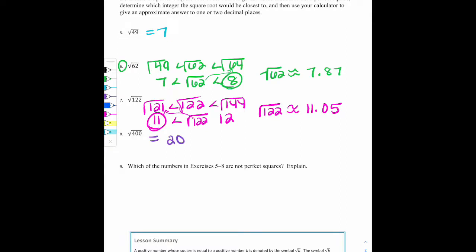Lastly, we have number 9. Which of the numbers in exercises 5 through 8 are not perfect squares? Explain. So now we can see from above that it was 62 and 122. And we have to be able to explain why.